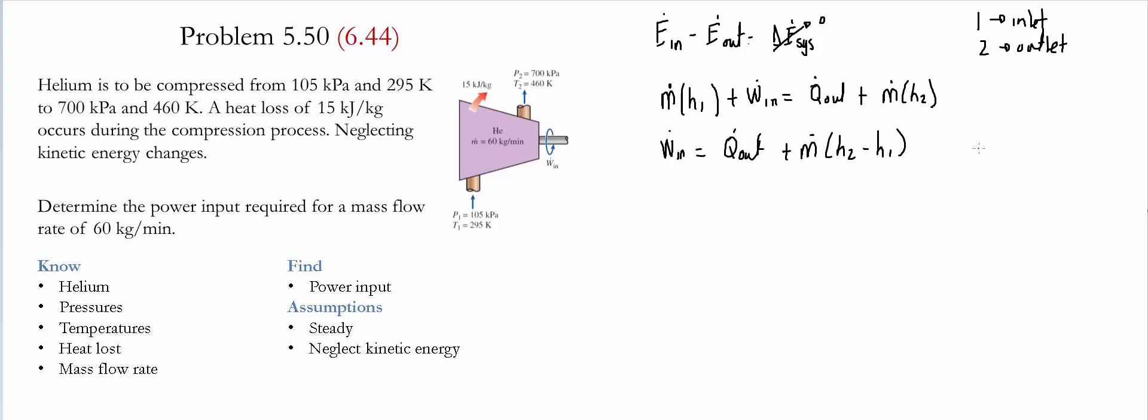Since helium is an ideal gas, we could approximate that the change of enthalpy is simply going to be the value of Cp times the change in temperature. We also know that the value of Q dot out is equal to the mass flow rate times the amount of heat loss per unit mass.